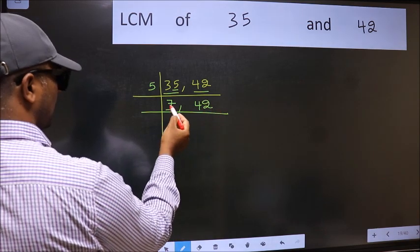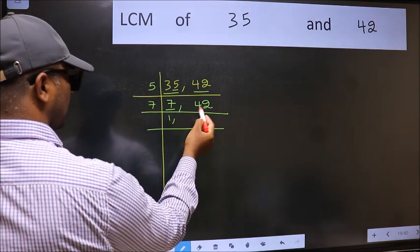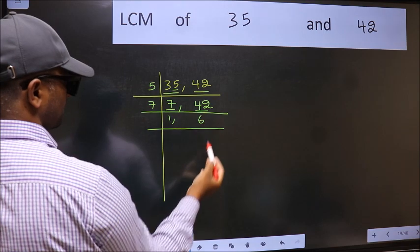Now here we have 7. 7 is a prime number. So 7 1 7. The other number 42. When do we get 42 in 7 table? 7 6 42.